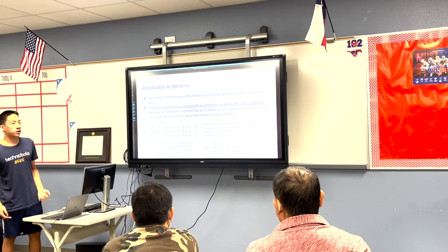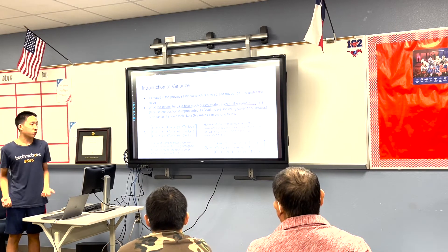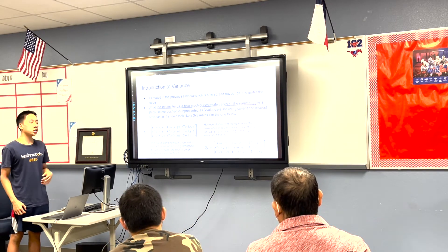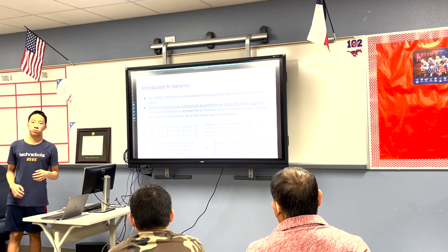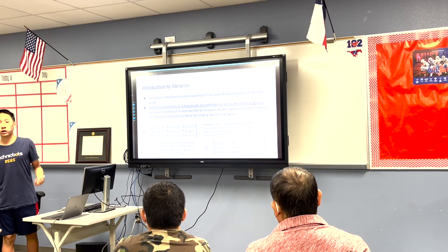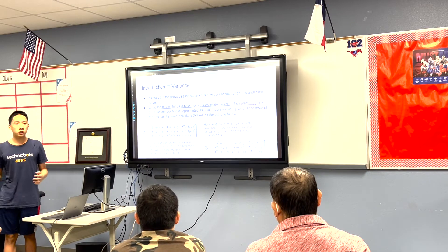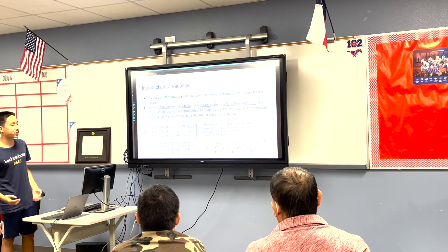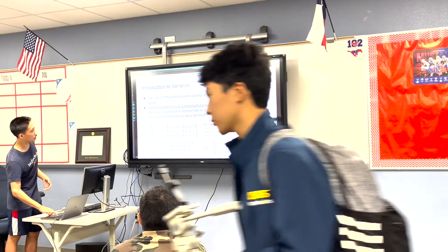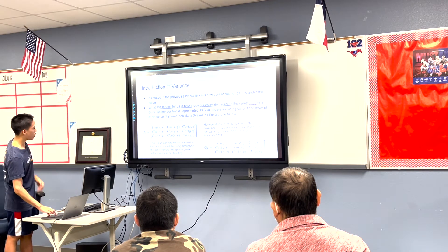Variance is just another word for uncertainty — it's how spread out our probability distribution or Gaussian is. The more spread out the curve is, the more uncertain we are. You can represent this as covariance.